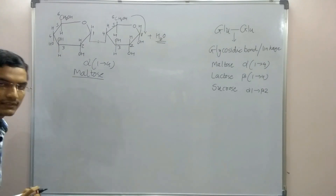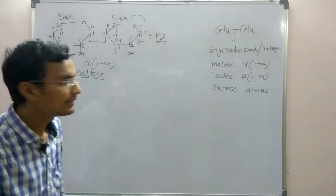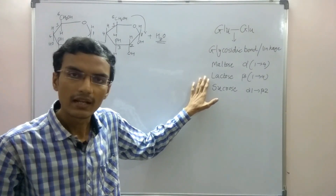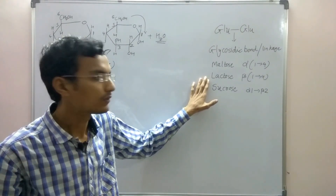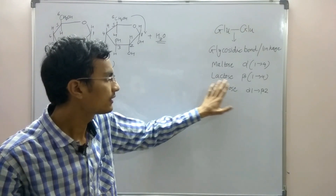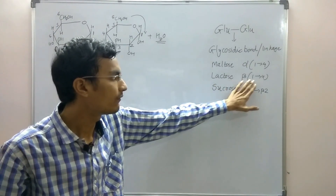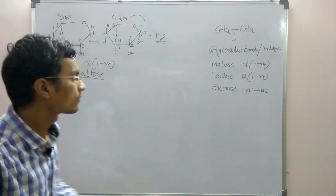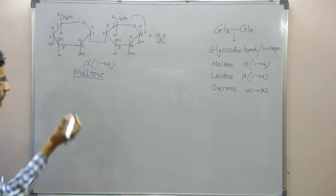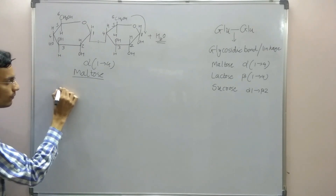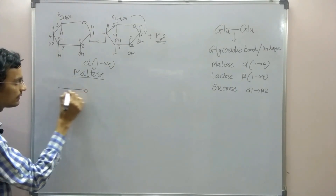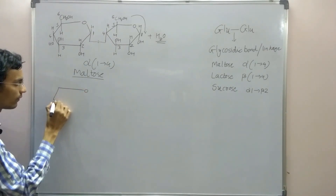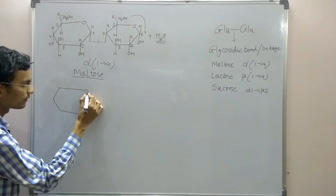The next disaccharide is lactose, in which galactose and glucose join to each other with a beta-1-4 bond. In lactose, the first molecule is galactose.